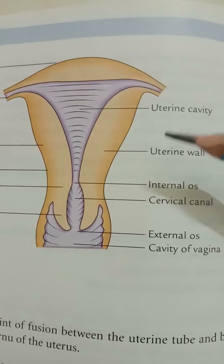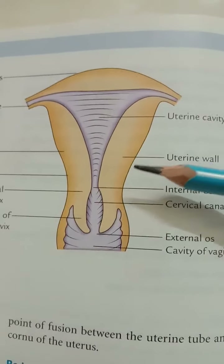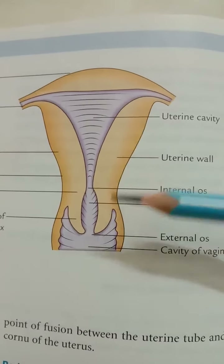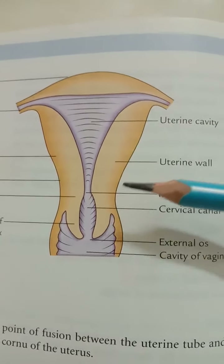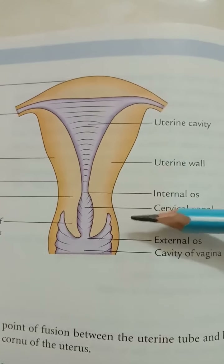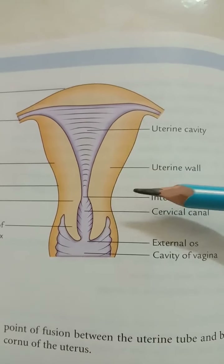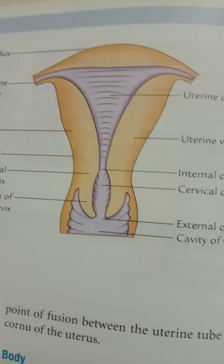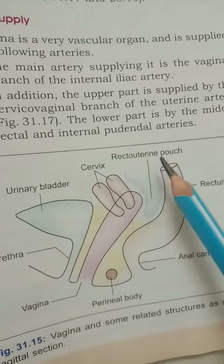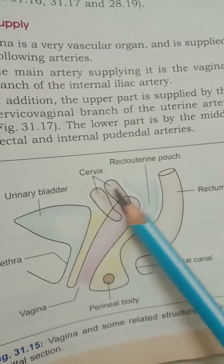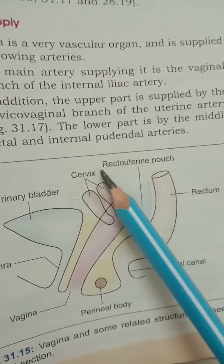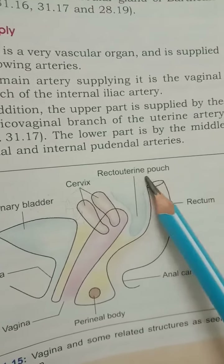The posterior surface is convex, directed upwards and backwards, and is covered by peritoneum which extends downward up to the posterior fornix of the vagina, where it is reflected onto the anterior aspect of the rectum to form the recto-uterine pouch, also called the pouch of Douglas. In this diagram the rectum, uterus, and the peritoneal fold between them — the recto-uterine pouch or pouch of Douglas — are visible.